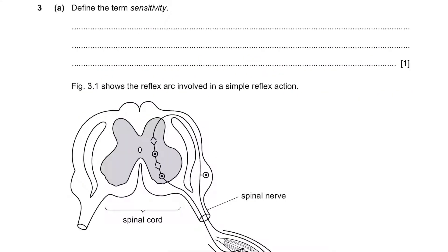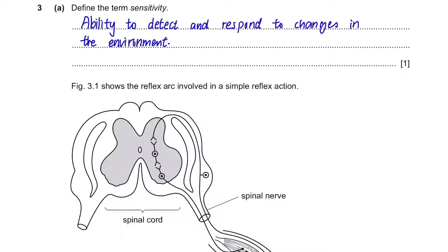Question 3, Part A: define the term sensitivity. Sensitivity is the ability to detect and respond to changes in the environment. Make sure you know all the definitions — at least those for MRS GREN.